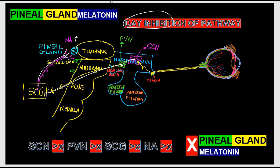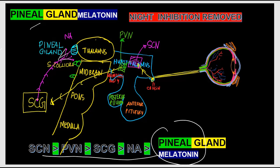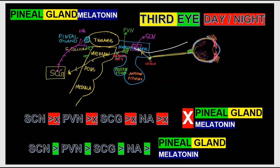From the paraventricular nucleus, the SCN can activate or inactivate the superior cervical ganglia via an indirect route. Sympathetic nerves from here release noradrenaline to the pineal gland. During daytime, noradrenaline release is inhibited, so no melatonin is produced. At night, the inhibition is removed, noradrenaline is released, and melatonin is secreted from the pineal gland. Melatonin acts through melanocortin receptors to maintain circadian rhythm — hence the 'third eye' designation.